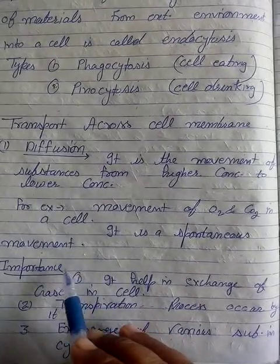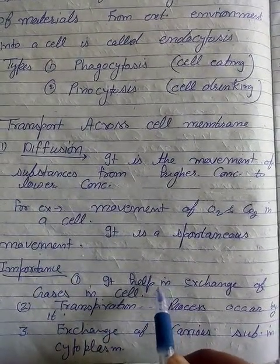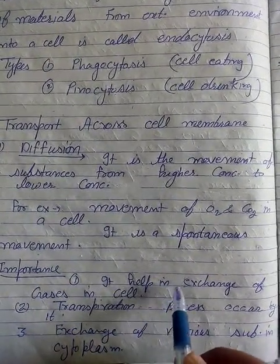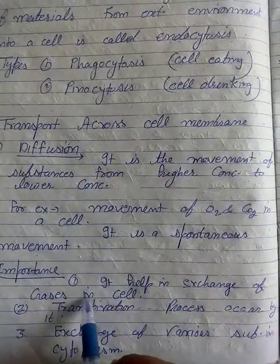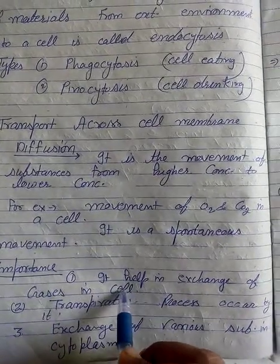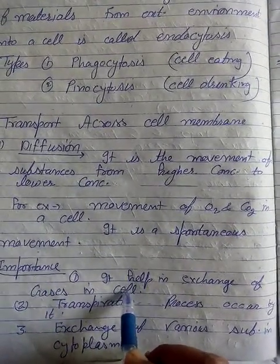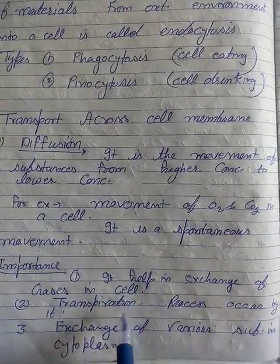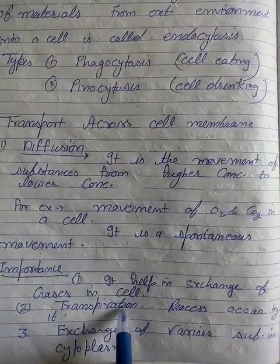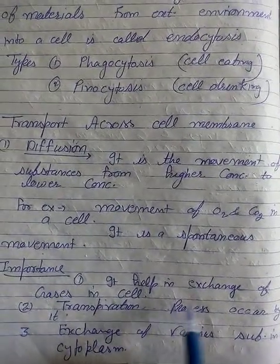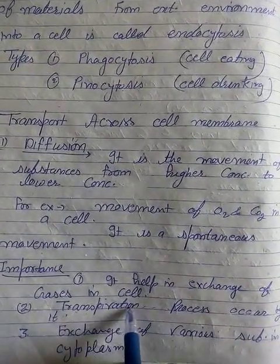Now we will discuss the importance of diffusion. Diffusion kia important hai? Because it helps in exchange of gases. Cell ke andar jo gases exchange hai woh diffusion ke zariye hota hai. Second, transpiration process jo plants mein hota hai, woh bhi diffusion process ke zariye hota hai.